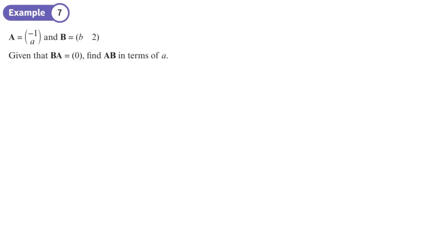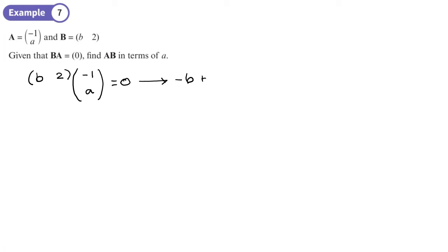We're given matrices A and B and told that B times A equals zero. So doing B times A: negative 1 times b plus 2 times a equals zero. That means b equals 2a.